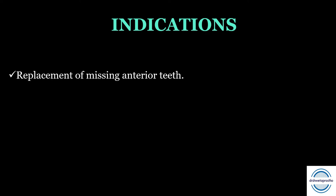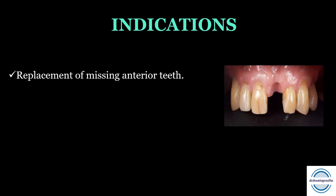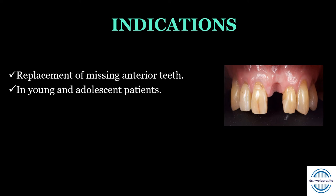The indications of resin bonded bridges: first, replacement of one or two missing mandibular anterior or one maxillary anterior tooth — occlusion must be considered and there should be no deep bite. Second, it is the treatment of choice in young and adolescent patients where we cannot do much reduction because of large pulp chambers and cannot give conventional fixed dental prosthesis.